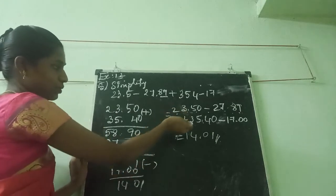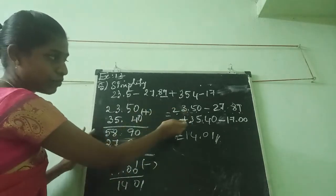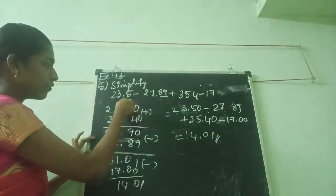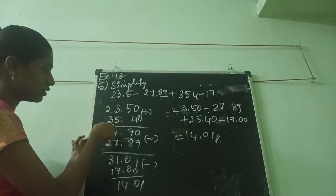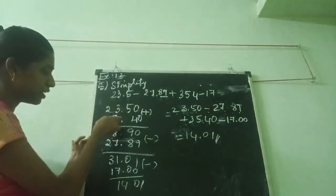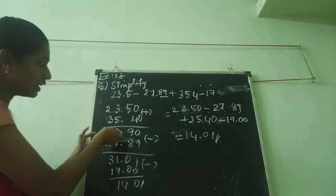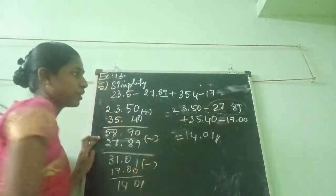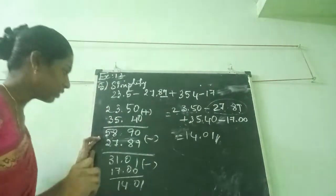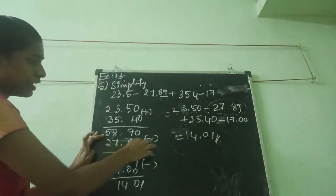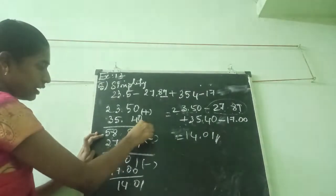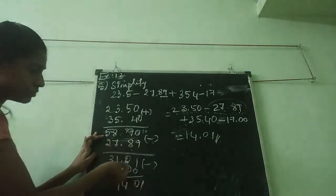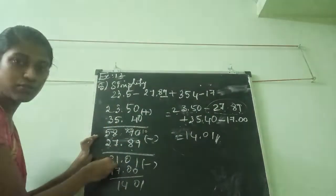First I am doing the addition of these 2 positive terms. The symbol is saying addition. 0 plus 0 is 0; 5 plus 4 is 9; 3 plus 5 is 8; 3 plus 2 is 5. I do the addition — the answer comes. Then I am minusing 27.89: 10 minus 9 is 1; 8 minus 8 is 0; 8 minus 7 is 1; 5 minus 2 is 3.